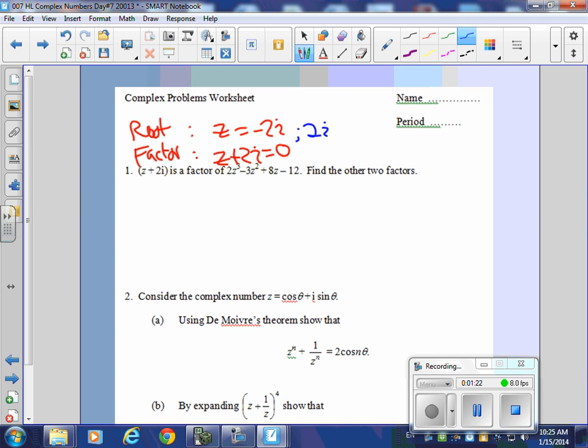So if that's the case, z equals positive 2i, then you can say the other factor is going to be z minus 2i. So the idea here is one factor is z plus 2i. The other one is z minus 2i. You okay with that? So there's two of the three, and we have one more to find.